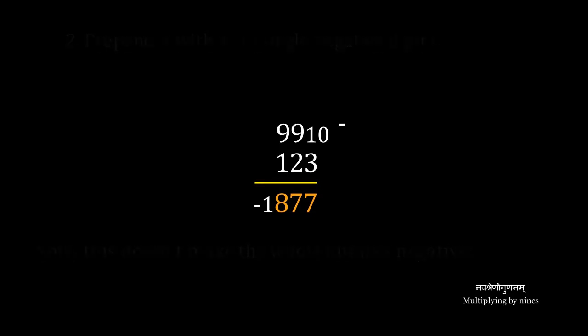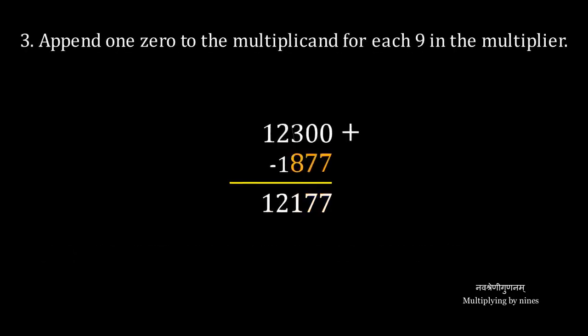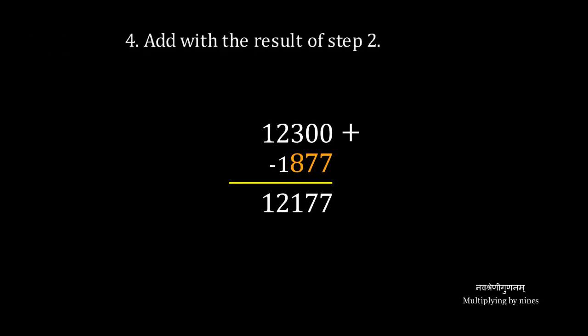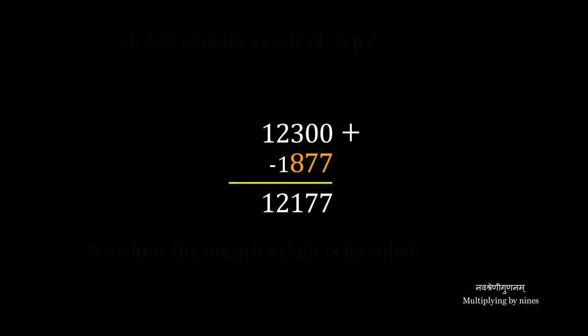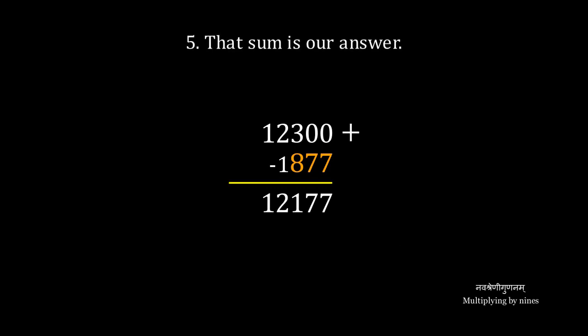We append one zero to the multiplicand for each nine in the multiplier. There are two nines, two zeros. Then we add the complement prefixed with negative one, adding digit by digit, treating the negative one as a standalone negative one. And that, 12177, is our answer.